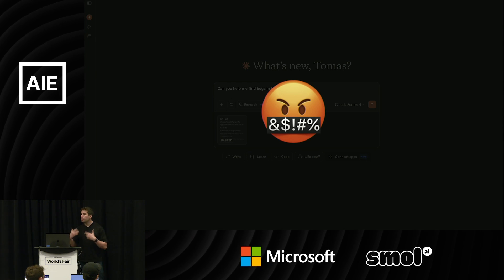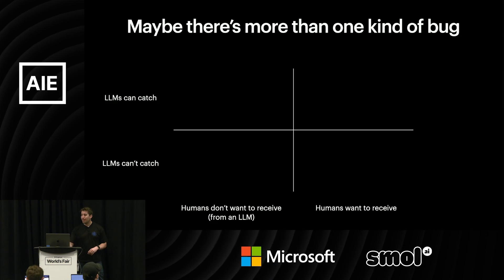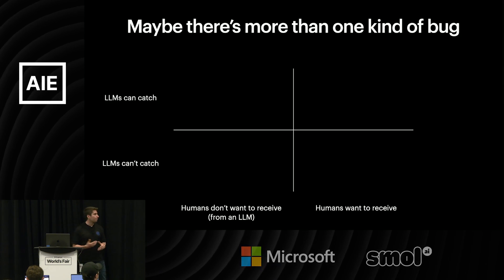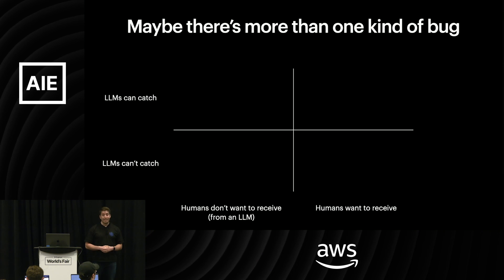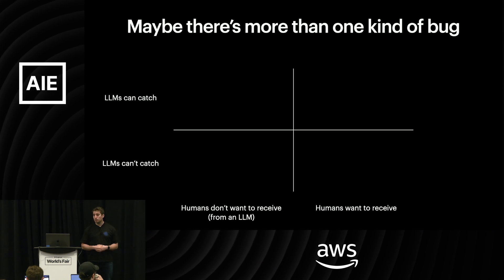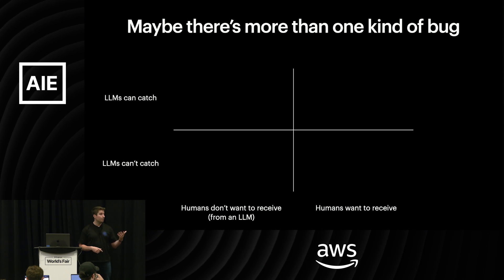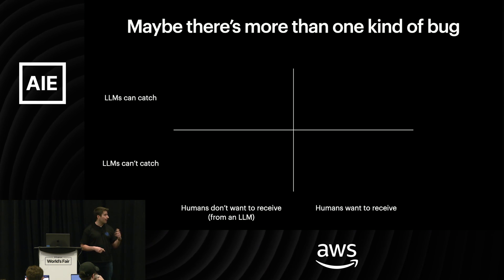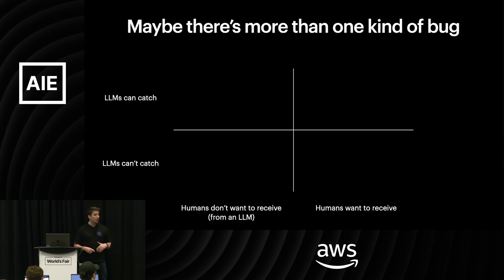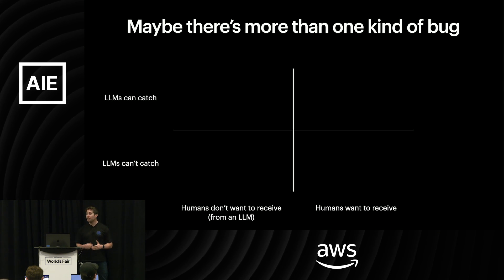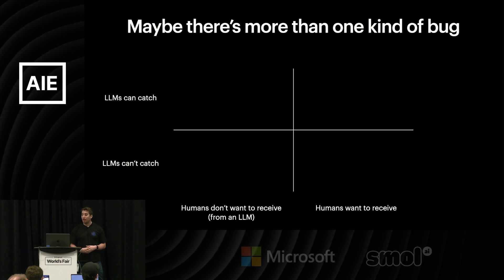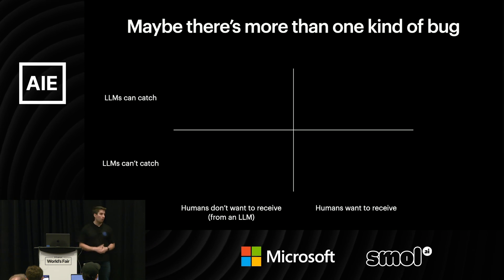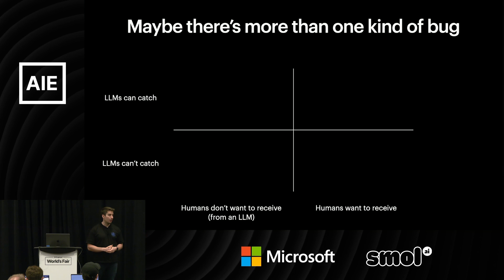And so as we started to think more around that classification of bugs, we started to think around actually a second axis: there's stuff LLMs can catch and LLMs can't catch, but there's also stuff that humans want to receive from an LLM and stuff humans don't want to receive from an LLM.